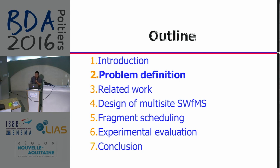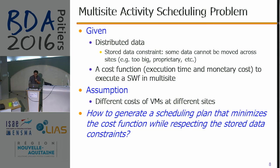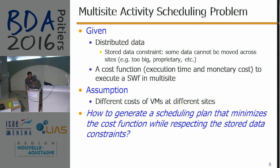In a multi-site cloud, we have distributed data at different cloud sites, and we have a predefined cost function to execute a scientific workflow in a multi-site cloud. We assume different costs of virtual machines at different cloud sites. The problem is how to generate a scheduling plan that minimizes the cost function while respecting stored data constraints. Sometimes the data cannot be moved because it is very large or because of data privacy issues — this is the stored data constraint.